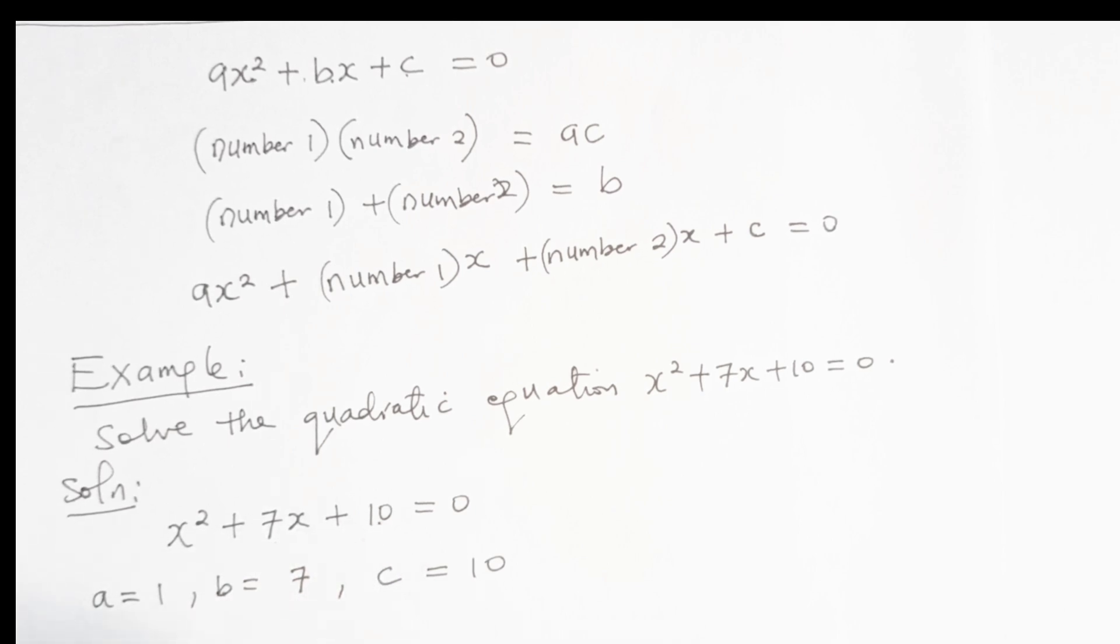We will find two numbers such that their product is equal to ac, which is 1 multiplied by 10. That gives us 10.